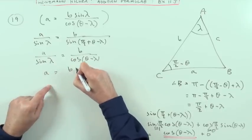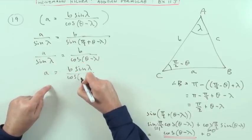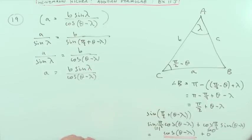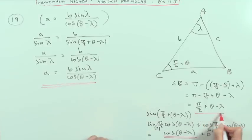And then finally, take the sine lambda across and multiply b sine lambda over cos theta minus lambda. And there it is. Those were the required parts.